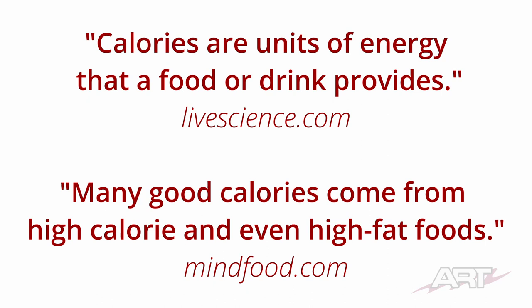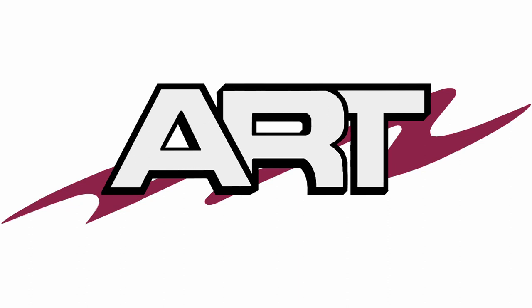And where does your arm get its energy from? Ultimately, it's from the food that you eat. The food we eat needs to contain calories — the good kind of calories. As this quotation says: calories are units of energy that a food or drink provides. Many good calories come from high calorie and even high fat foods. So it really is all about the eating. I hope after enduring this video you'll treat yourself to a good meal. The ART logo features a lightning bolt that's been converted to a brush stroke — showing the correlation between energy and paint adhesion. Thank you for watching.